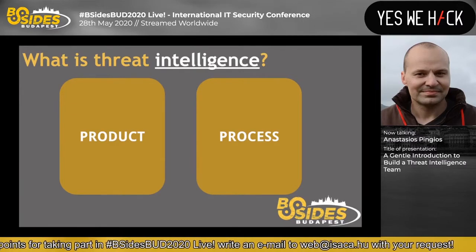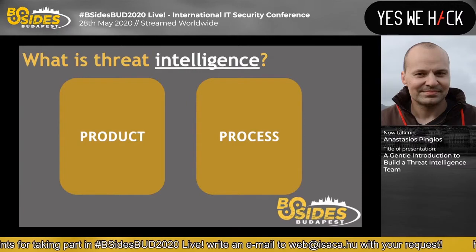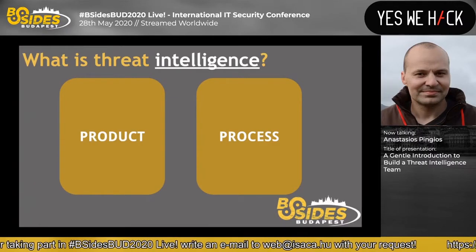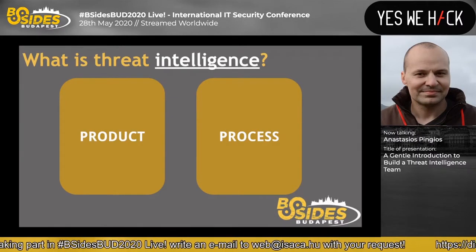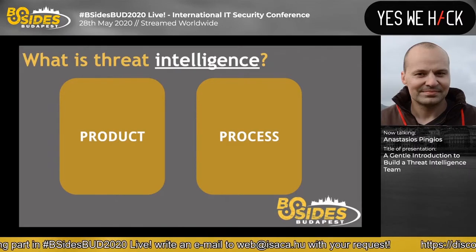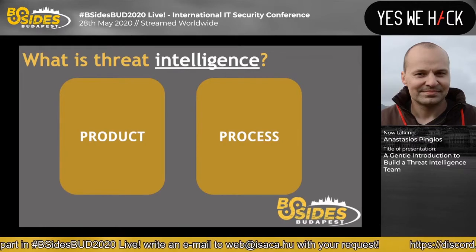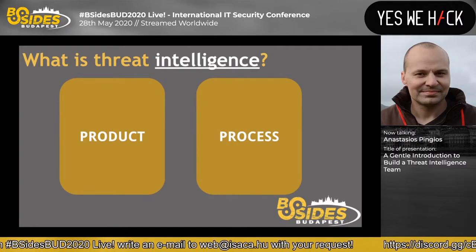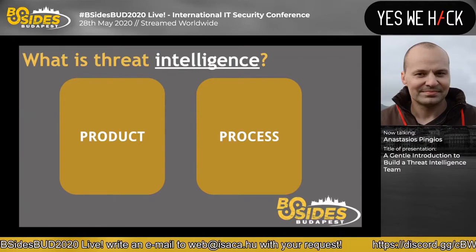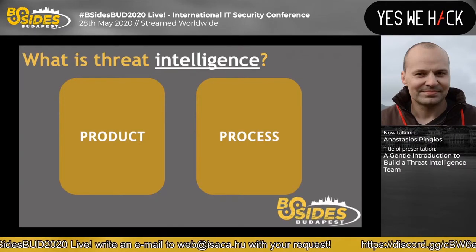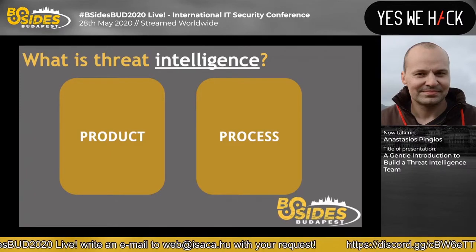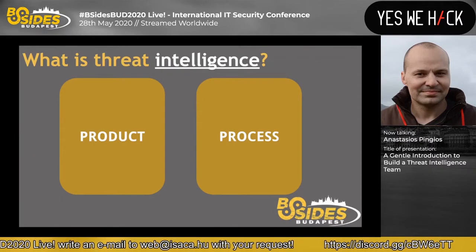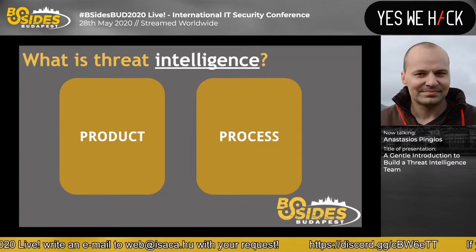Another part that confuses a lot of people is that intelligence is not a single thing — depending on the context it can change. There are two sides: what do you produce, and the process you follow. You might write a report on a threat actor or share indicators of compromise for a new ransomware — those are intelligence products. At the same time, all of the steps you took to make something actionable and share it is also intelligence — the intelligence process. Depending on context you might hear one or the other, but it should be easy to distinguish.